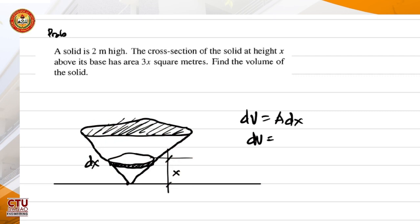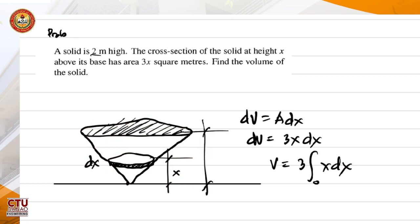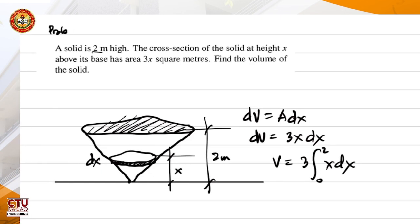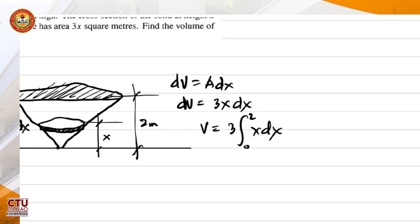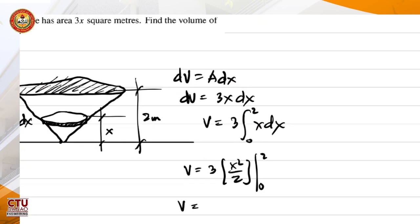The differential volume is just area times thickness. Our cross-sectional area at height x is 3x, so the differential volume is 3x dx. Therefore the volume is the integral of 3x dx from 0 to 2, since the total height is 2 meters. Evaluating: 3 times x squared over 2 from 0 to 2 gives a volume of 6 cubic units.